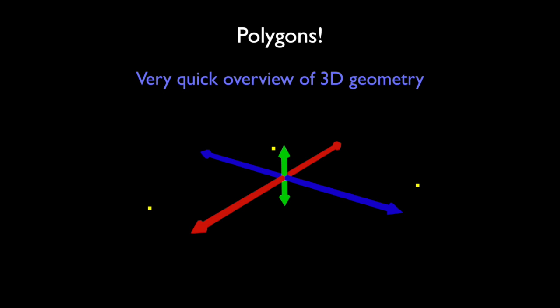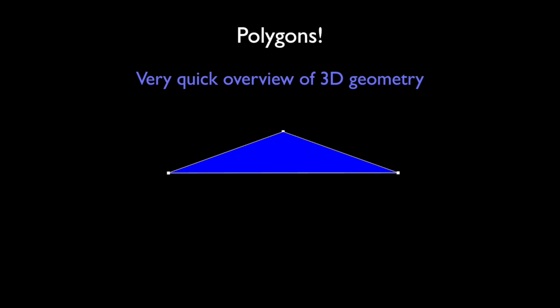Those shapes are commonly called 3D polygons or just polygons. The most basic kind of polygon is the triangle. Every model that you've ever seen in a 3D game, PlayStation 4, Xbox One, they're all made out of thousands or sometimes even millions of these little triangles. Everything in 3D modeling is about triangles.